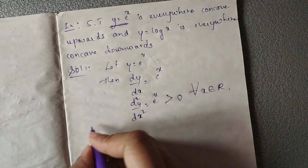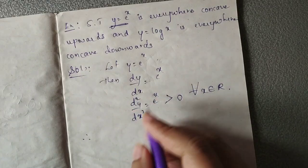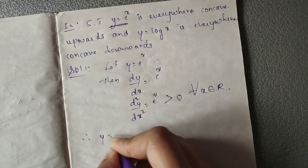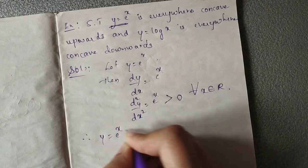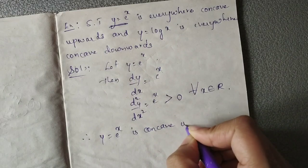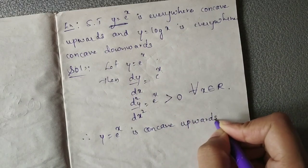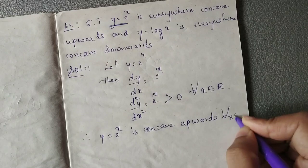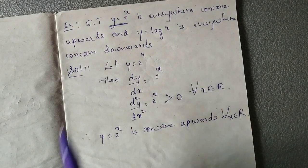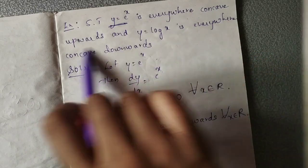Therefore, d squared y by dx squared is greater than 0, which implies the curve y equal to e raised to x is concave upwards for all x belonging to R. Therefore, the given curve is everywhere concave upwards.